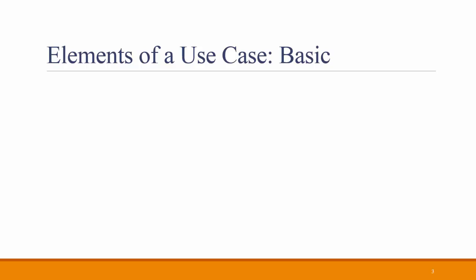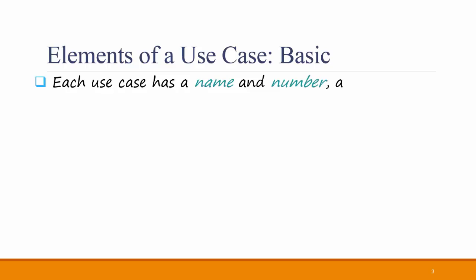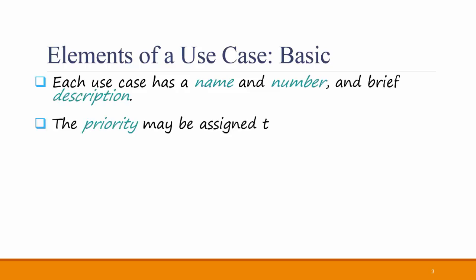Let's talk about some of the basic elements of a use case. Each use case should have a name, a number, and a brief description. A priority may be assigned to indicate the relative significance of a use case. These priorities correspond to the priorities that you might put with requirements in the requirements definition document.